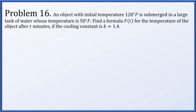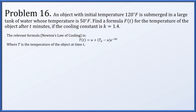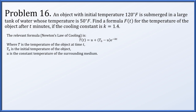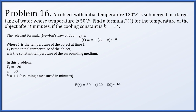Problem 16. An object with an initial temperature of 120 degrees Fahrenheit is submerged in a large tank of water at 50 degrees Fahrenheit. Find a formula f(t) for the temperature after t minutes if the cooling constant is k equals 1.4. Newton's Law of Cooling gives: T(t) equals u plus (t0 minus u) times e to the minus kt, where t0 is the initial temperature and u is the surrounding medium's constant temperature. Here, f(t) equals 50 plus (120 minus 50) times e to the minus 1.4t, which simplifies to 50 plus 70 times e to the minus 1.4t.